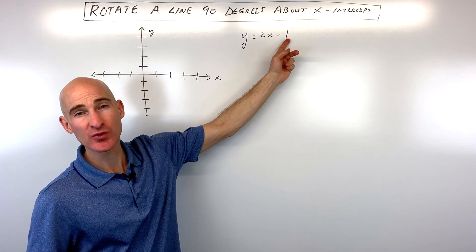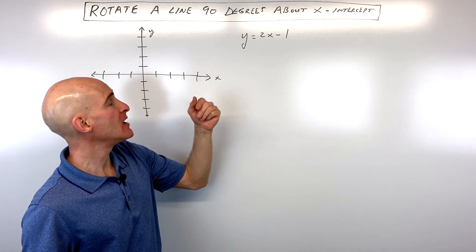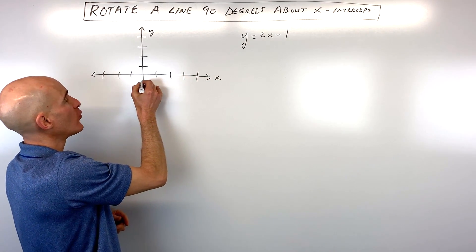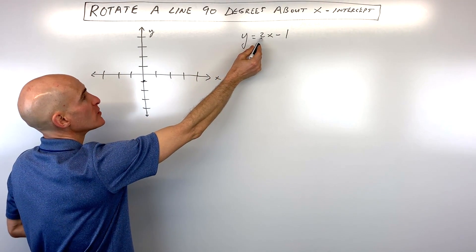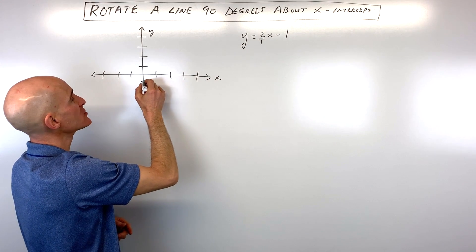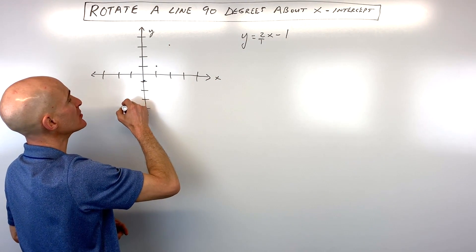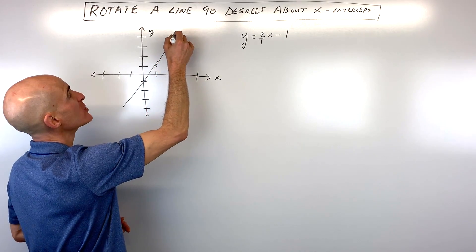You have the equation y equals 2x minus 1. We know this represents a line. Let's go ahead and graph it on our graph here. We know the y-intercept is negative 1. We know that the slope is 2, which is 2 over 1. So we're rising 2, running 1, rise 2, run 1. That's going to be our original line there.